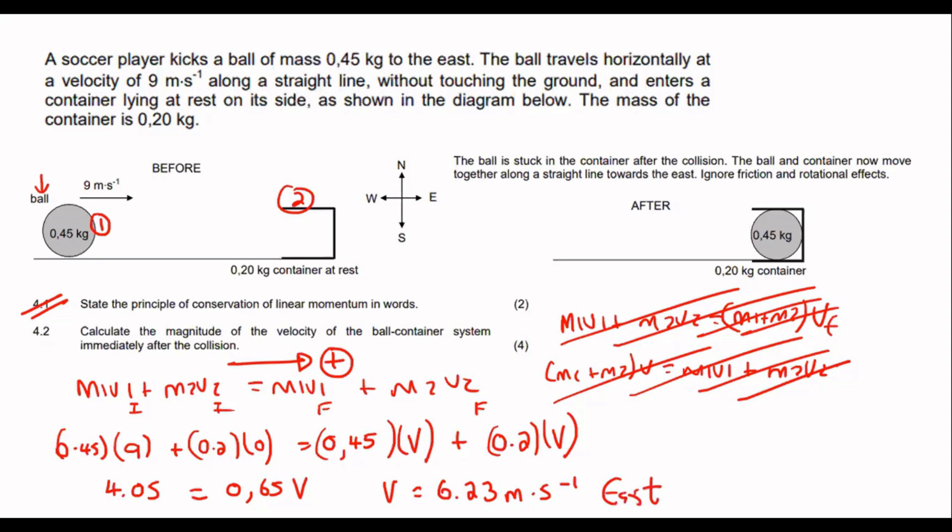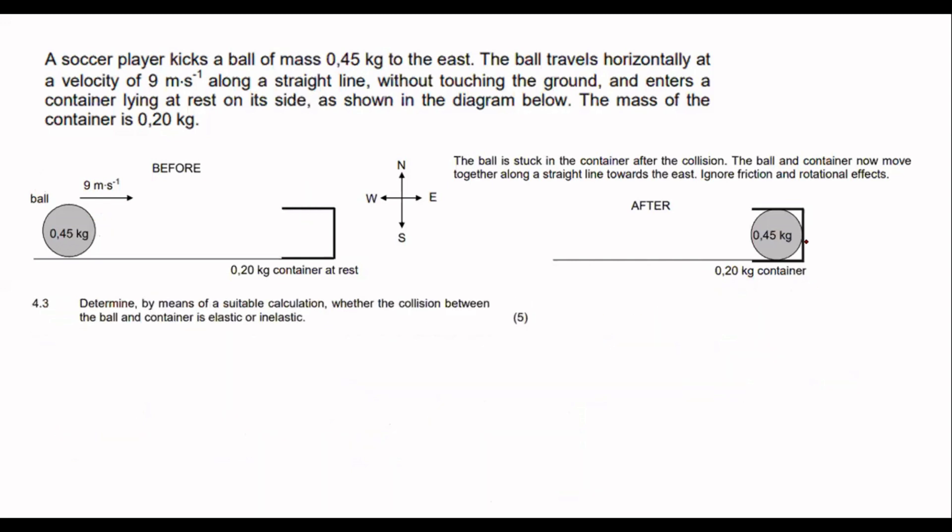So, that's just 6.23 meters per second east. And that's it. That's quite an easy question. So, the point is, these two objects are going to be moving at 6.23 meters per second after the collision.